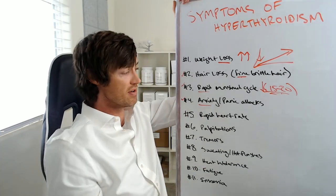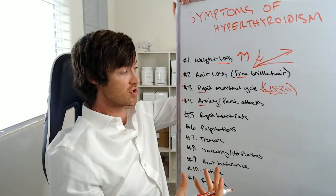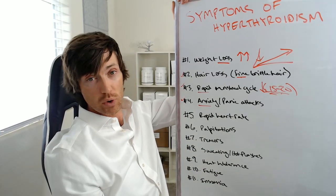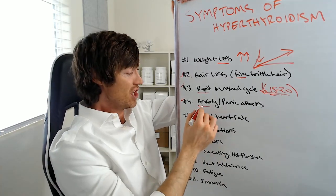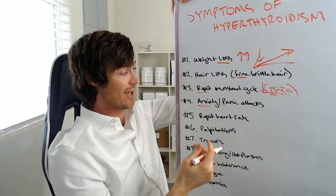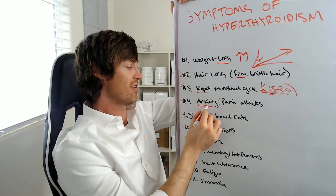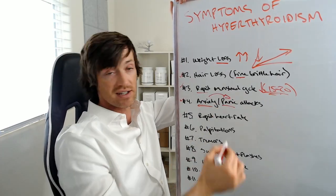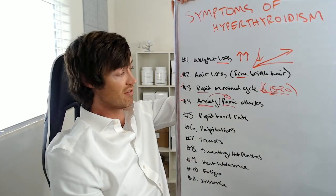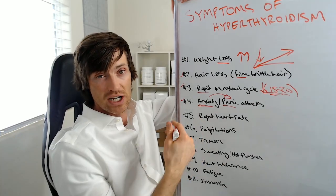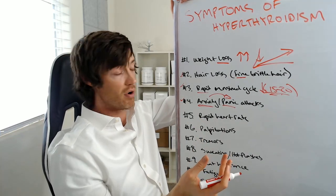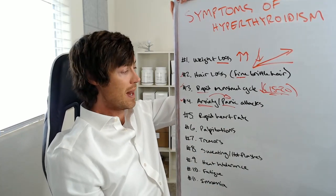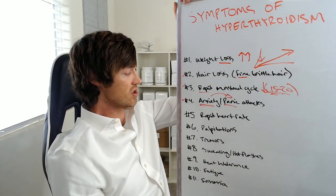As your thyroid gets revved up and you have too much thyroid hormone floating around in your body, you may start to get a nervous, jittery energy that can be manifested as anxiety. In addition, that anxiety can then trigger panic attacks in susceptible individuals. So if you've never had anxiety before and suddenly you're starting to experience panic attacks, that could be a sign that your thyroid is just too high.